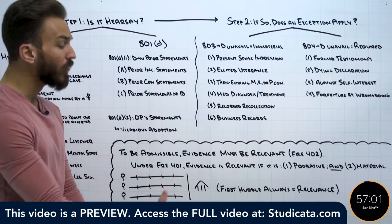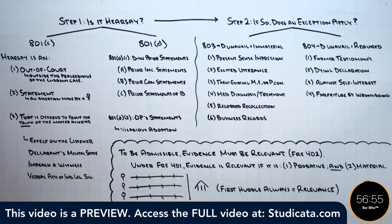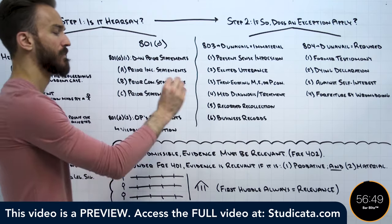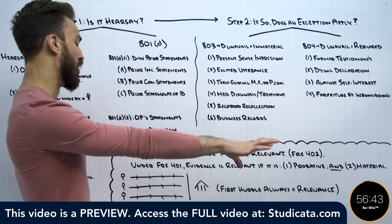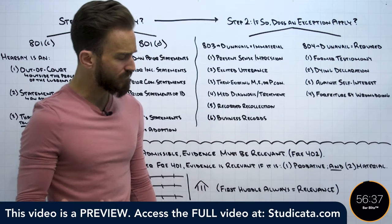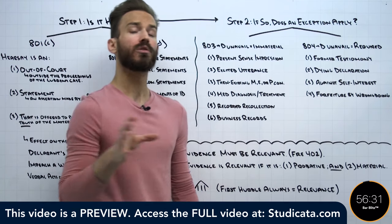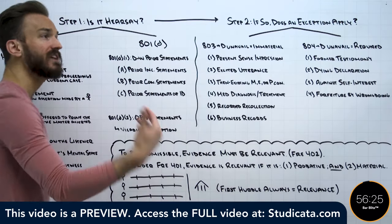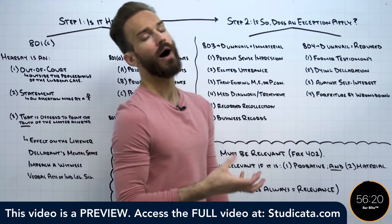Our first hurdle is always relevance. Rule 402 of the Federal Rules of Evidence tells us that irrelevant evidence is not admissible — to be admissible, evidence must be relevant. So our first hurdle is always going to be Rule 401. Under 401, evidence is relevant if it is both probative and material. Probative means the evidence has any tendency to make a fact more or less probable than it would be without the evidence, and material means that the fact is of consequence in determining the outcome of the action.